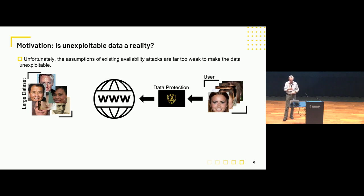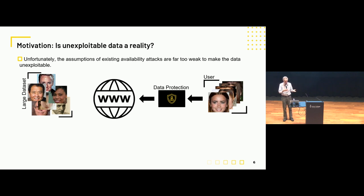There's a range of techniques developed to create availability attacks. These methods tend to add imperceptible noise to clean data so that neural networks are basically hobbled in terms of being able to learn from that protected data. By adding the noise, your image still looks like you to a human, but you can put it on the web with confidence that somebody can't use it for their nefarious purpose. Or can they? Is unexploitability a reality or not?